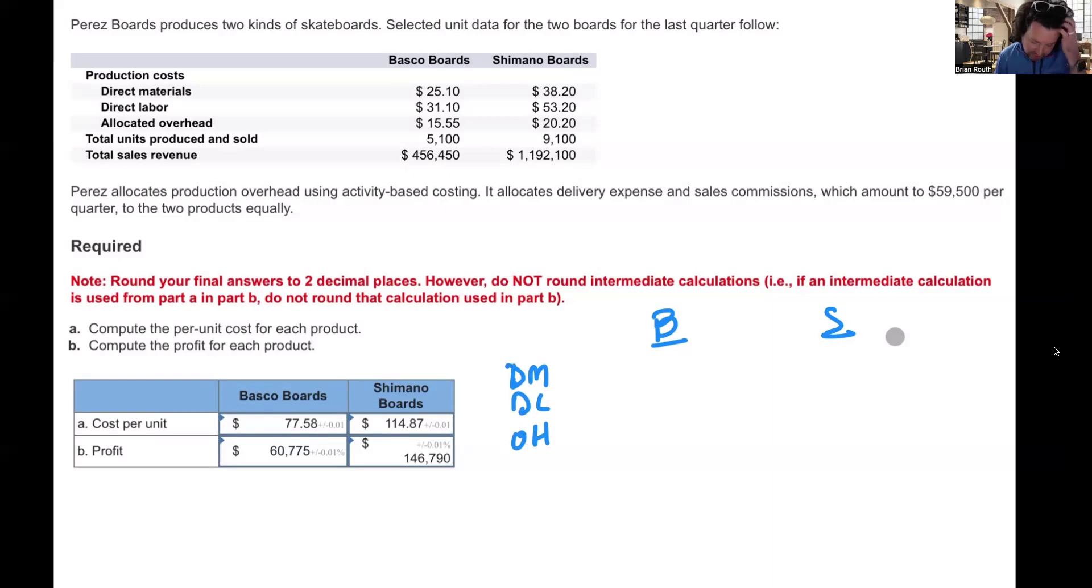They tell us in the story that direct materials is $25.10 per board. So $25.10 times the number of boards. Well, they tell us the number of units produced is 5,100. So we'll multiply that times 5,100. Same thing for the Shimano. That is $38.20 per board, which is 9,100. And we'll do the same thing for labor and overhead.